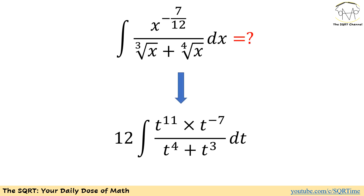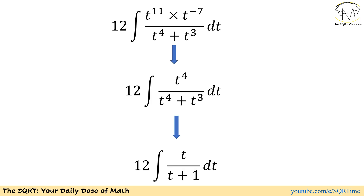Now let's replace everything: x to the power of negative 7 over 12 becomes t to the power of negative 7, the third root of x becomes t to the power of 4, the fourth root of x becomes t to the power of 3, and dx becomes 12 times t to the power of 11 dt. Simplifying, t to the power of 11 times t to the power of negative 7 gives t to the power of 4. Canceling t to the power of 3 on the bottom with t to the power of 3 on the top, I end up with 12 times the integral of t over 1 plus t dt.